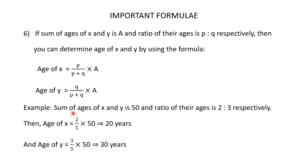For example, sum of ages of x and y is 50 and ratio of their ages is 2 is to 3 respectively. Now we are asked to find the ages of x and y. The sum of the terms of the ratio is 5, 2 plus 3 is 5. Age of x is equal to 2 divided by 5 multiplied by 50, which is 20 years. And age of y is equal to 3 divided by 5 multiplied by 50, which is 30 years.